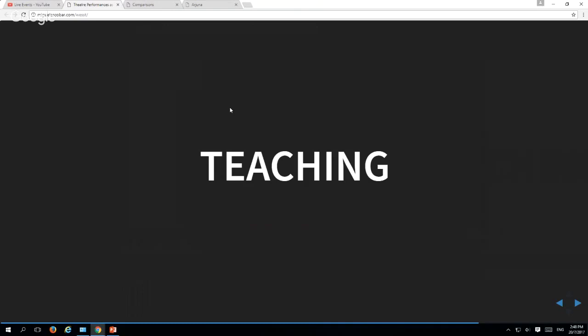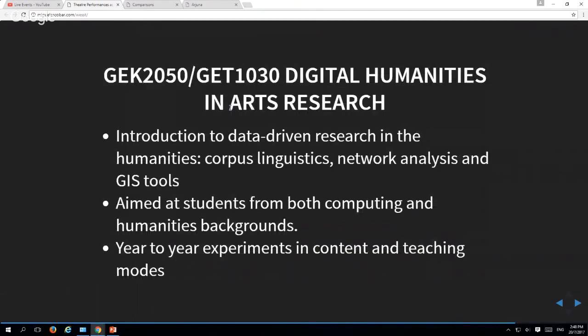One course that we've been developing as the general education model over the past three years is Digital Humanities in Arts Research. What we want to achieve with this ideally is an introduction to data-driven research in the humanities. It's not specifically about theater, but we try to show students that a lot of really fascinating questions can be asked when you treat things that come from the historical record. They can be books, they can be videos, they can be all sorts of documents from the past. We introduce them to corpus linguistics, network analysis, and a set of GIS tools. The idea is that they have to do a simple data-driven individual exercise, but also work together with groups of students from other disciplines in imagining what a resource like this could be like. This is aimed at students both from computing and humanities backgrounds. We also do year-to-year experiments in content and in teaching modes.